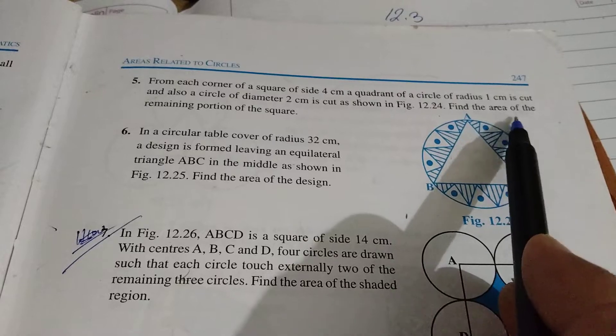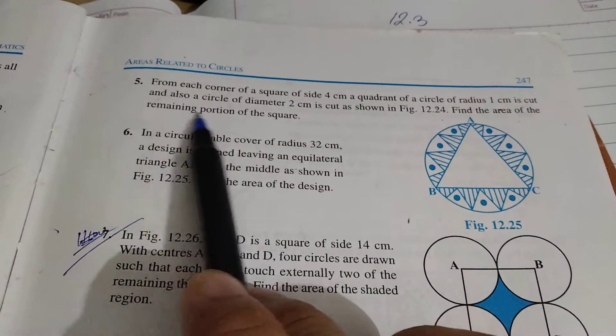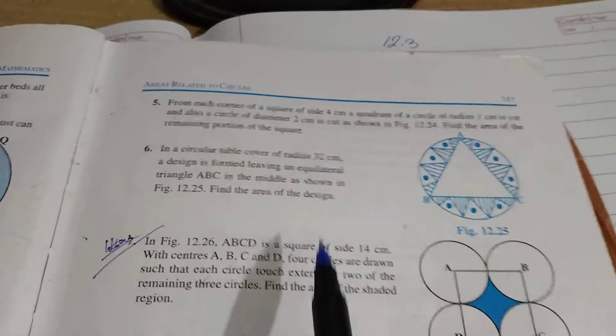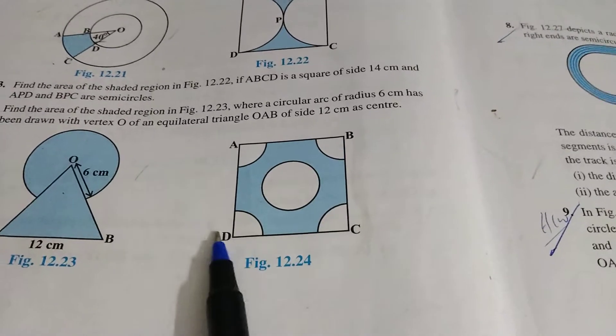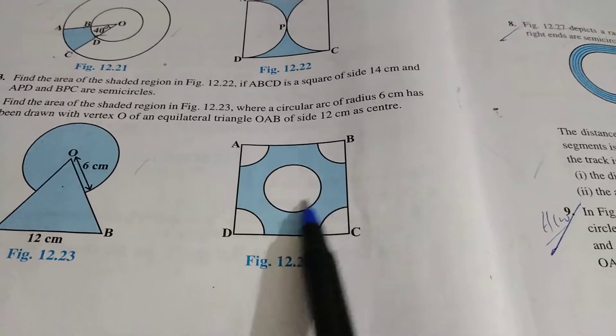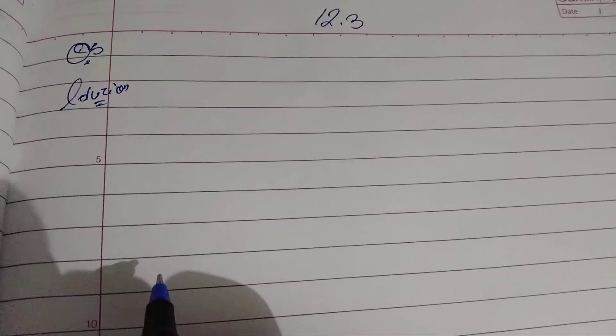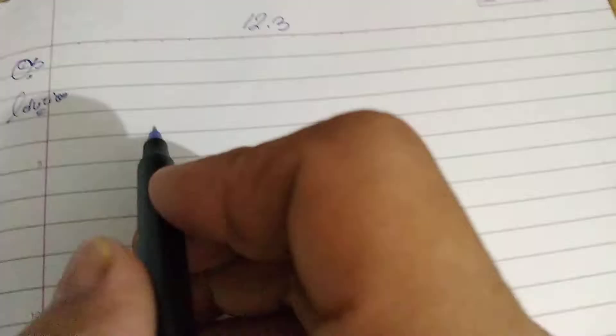Find the area of the remaining portion of the square. So, figure 12.24, this is the figure. We are going to find the shaded region. Let's begin with the details given in the question.